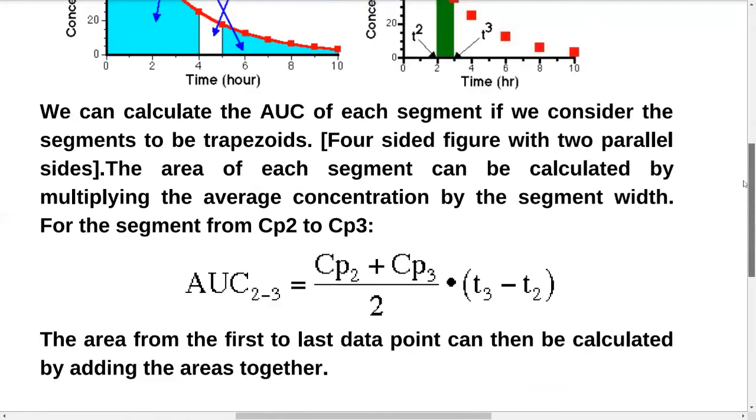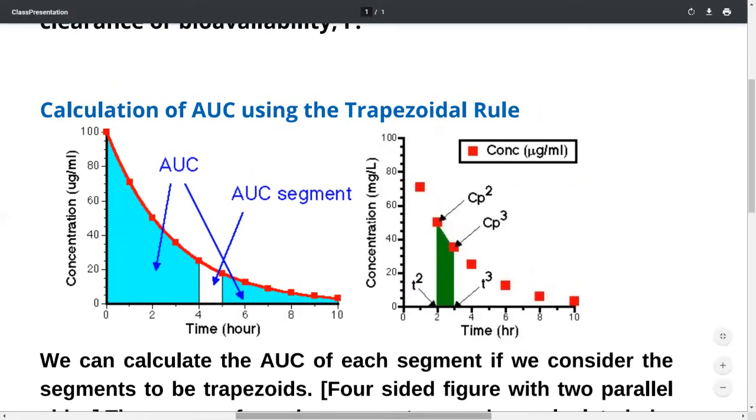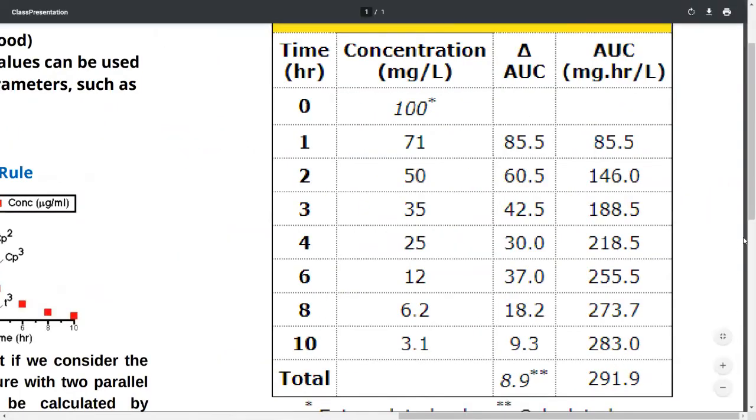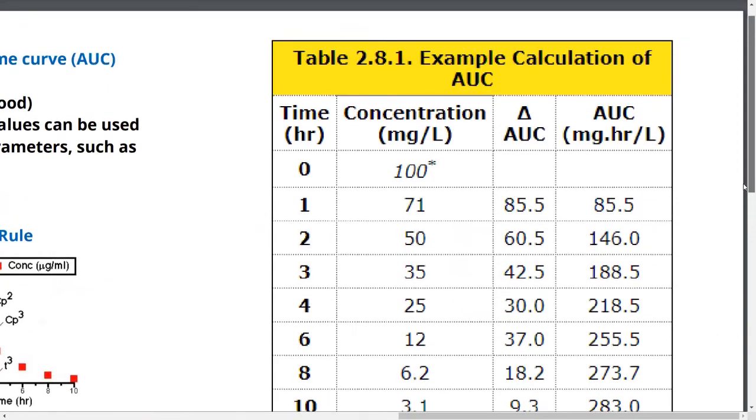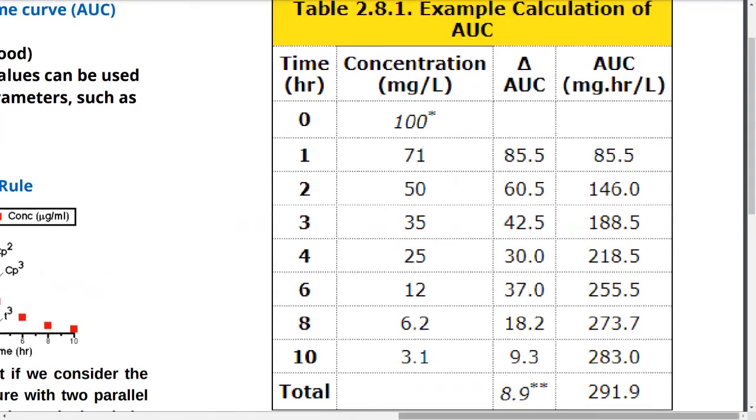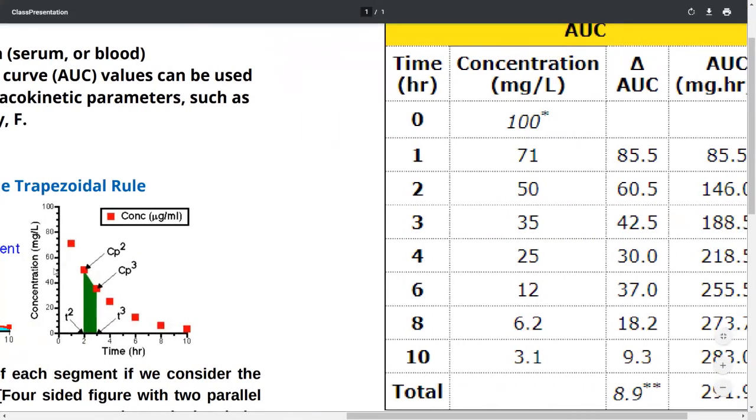This can be better explained when we look at the example given. This shows the calculation of AUC in the particular figure. We can see that the maximum concentration is 100 mg per liter. The extrapolation has been done to indicate the concentration at time 0.